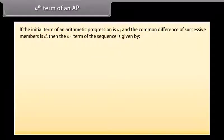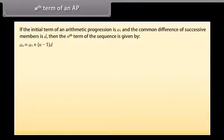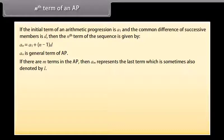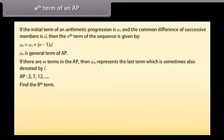The nth term of an AP: if the initial term is a1 and the common difference of successive numbers is d, then the nth term is given by: an equals a1 plus (n minus 1) times d. This is also called the general term. If there are m terms in the AP, then am represents the last term, sometimes denoted by l. Now, using this formula, let us find the 8th term of the given AP.